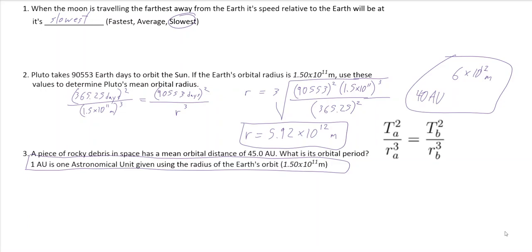Let's take a look at question three. A rocky piece of space debris has a mean orbital radius of 45 AU. What is its orbital period? Now keep in mind that we have one astronomical unit is that. I'm not going to use this. I'm just going to remember that it's one Earth's orbit. So, if I go 365.25 squared over 1 AU, this is the Earth, and I compare the Earth to the rocky debris.